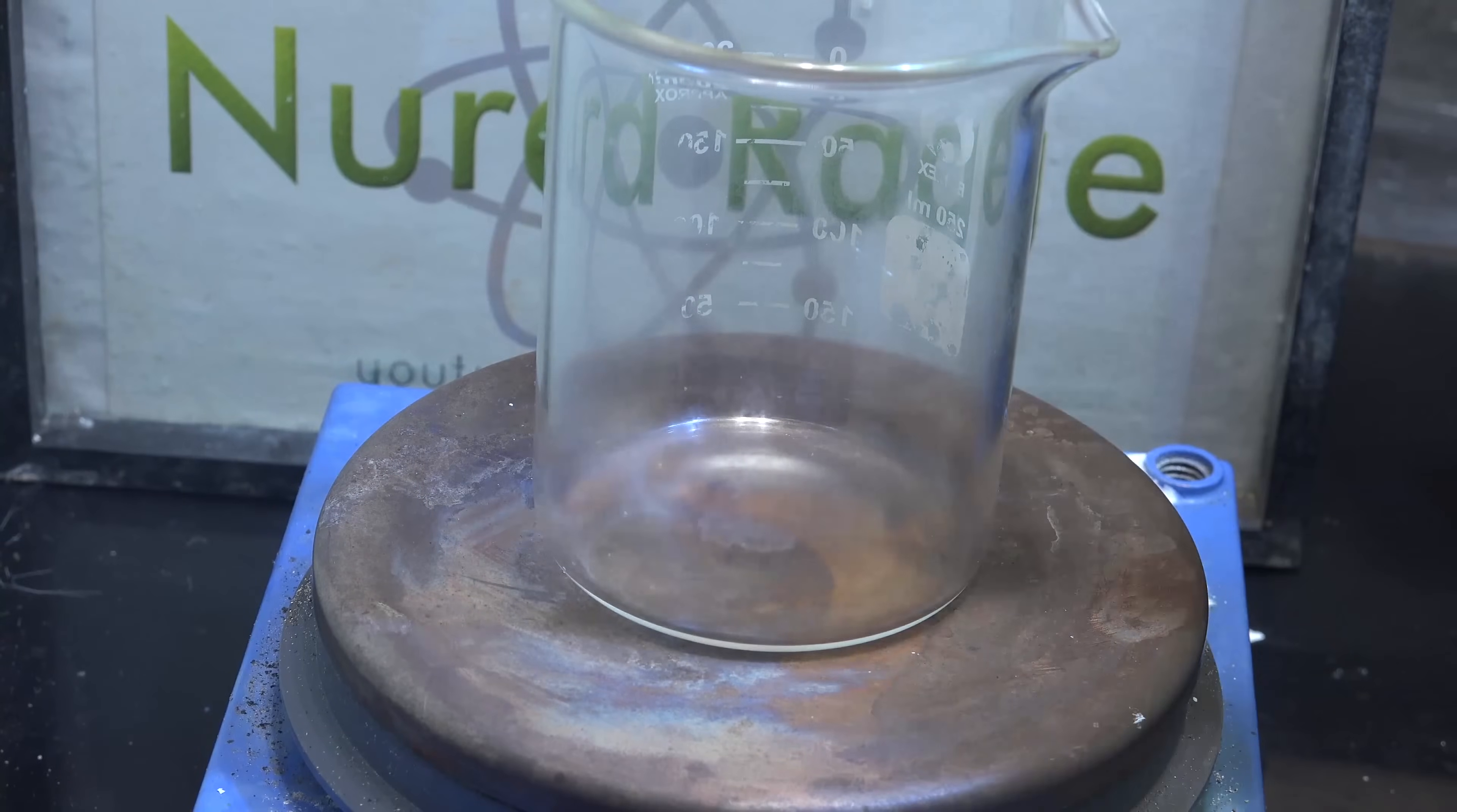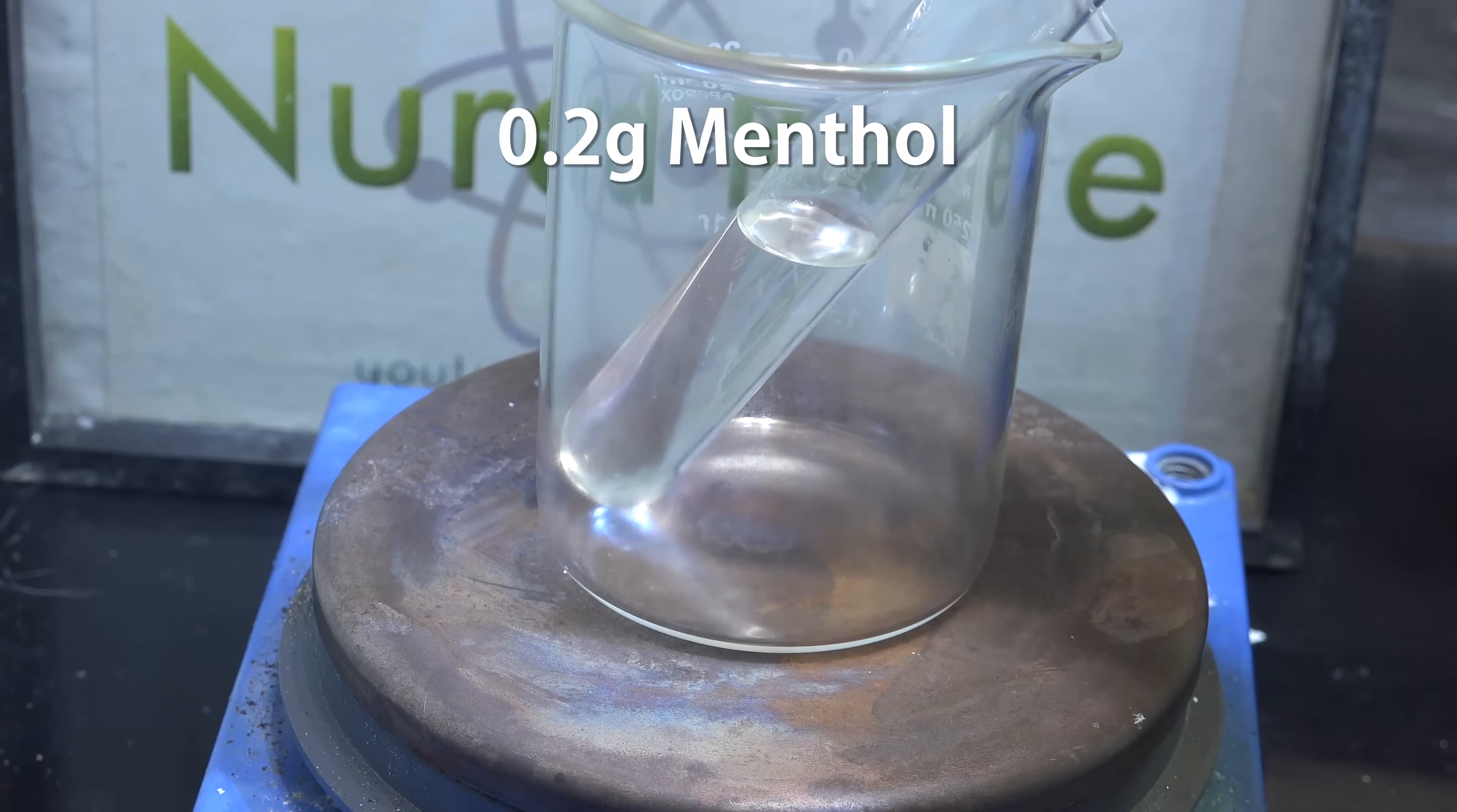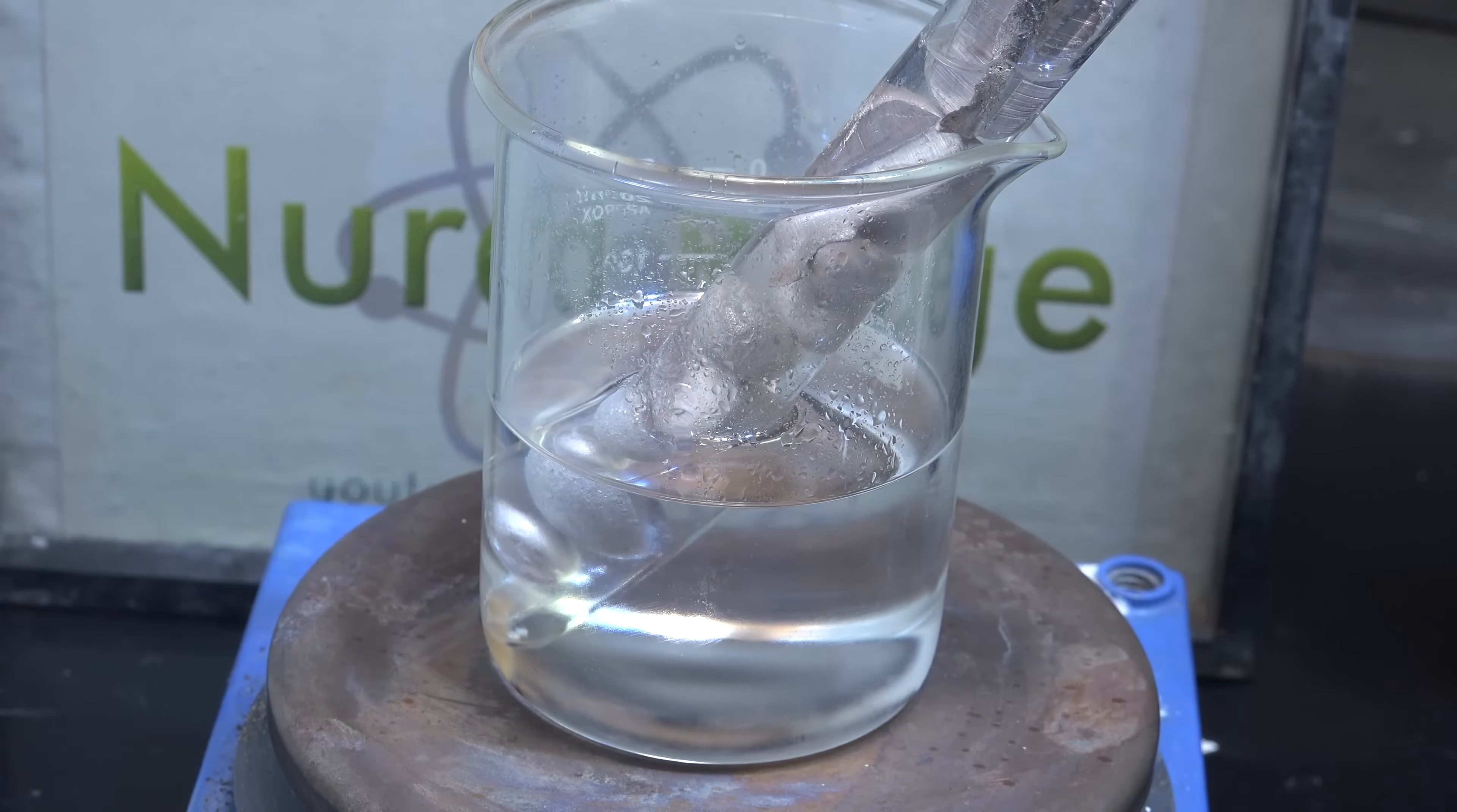The brute force method is to first get a tall and thin container like a test tube and fill it with some mineral oil. I'm using about 20mL. Then add in about 0.2g of menthol. Now insert our sodium metal. Around this test tube we pour oil into a beaker and set up an oil bath.